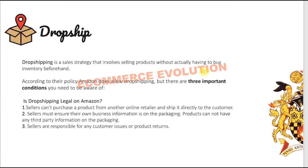This is the third business model on Amazon: drop shipping. You can understand from the name what the basic strategy is. Drop shipping is a sales strategy that involves selling products without actually having to buy inventory beforehand. You list a product on Amazon but you don't actually have the inventory of that product with you.